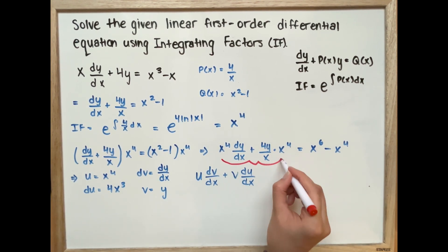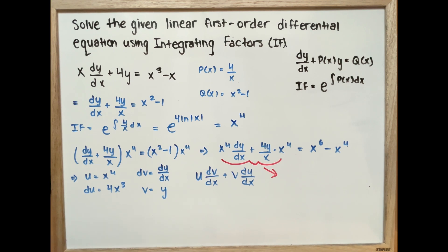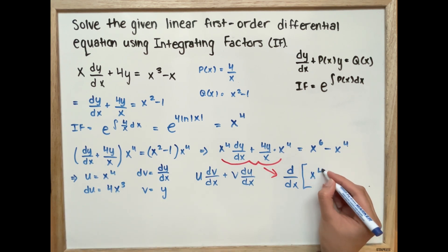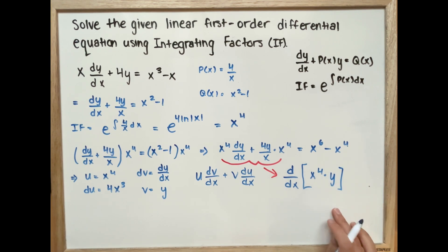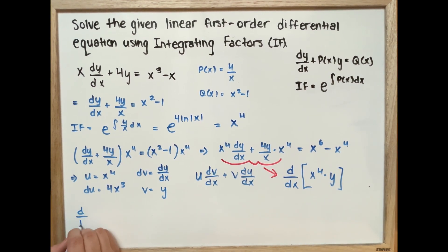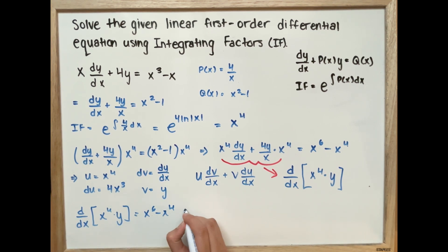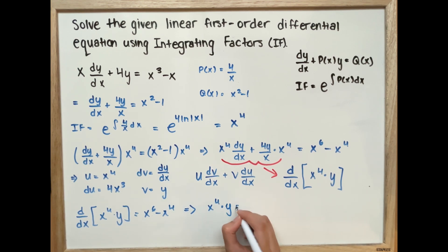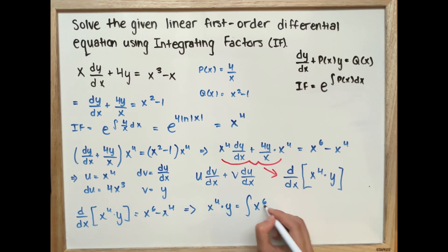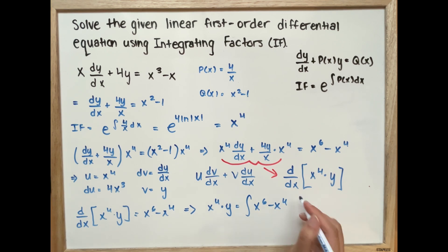We can simplify the left side of our equation to d over dx of x to the power of 4 times y. Rewriting the full equation and moving the d over dx to the right side by integrating, we get x to the power of 4 times y is equal to the integral of x to the power of 6 minus x to the power of 4 dx.